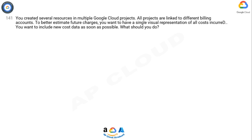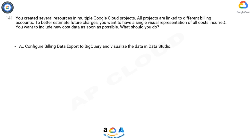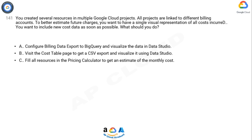Question 141. You created several resources in multiple Google Cloud projects. All projects are linked to different billing accounts. To better estimate future charges, you want to have a single visual representation of all costs incurred. You want to include new cost data as soon as possible. What should you do?